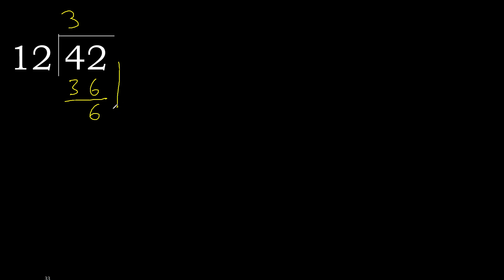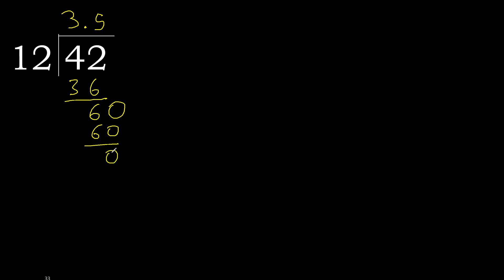The remainder is not a whole number, so we complete with a decimal point and add 0, giving 60. 12 multiplied by 5 is 60 — 60 is not greater, so we subtract: remainder is 0, therefore finished.